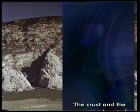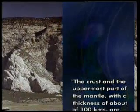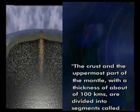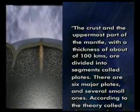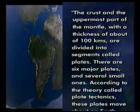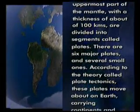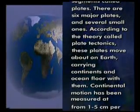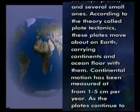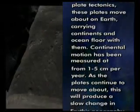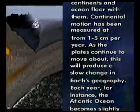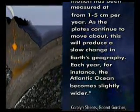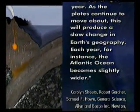The crust and the uppermost part of the mantle, with a thickness of about 100 kilometers, are divided into segments called plates. There are six major plates and several small ones. According to the theory called plate tectonics, these plates move about on earth, carrying continents and ocean floor with them. Continental motion has been measured at from one to five centimeters per year. As the plates continue to move about, this will produce a slow change in earth's geography.